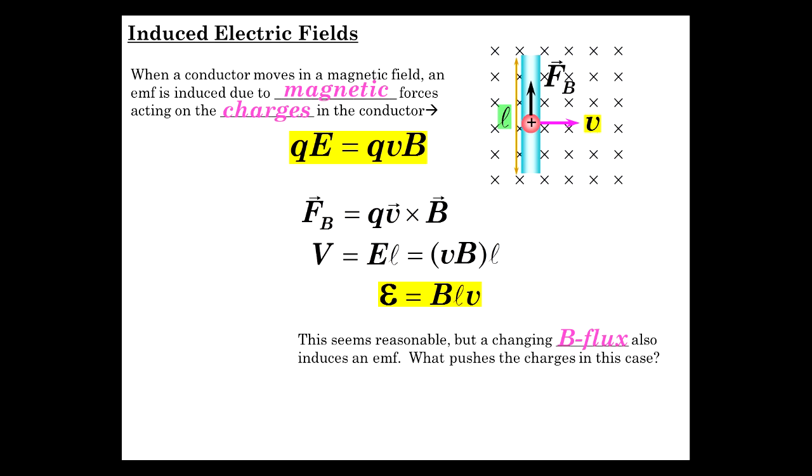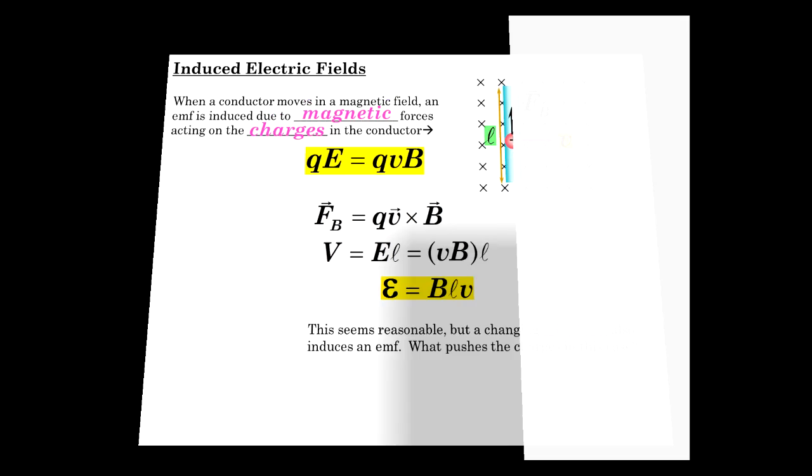But we've also established that a change in magnetic flux induces an EMF. And it may not be so simple to understand, or intuitively obvious at least, what causes the charges to move. You have a change in magnetic flux, and that's going to cause charges to separate in a conductor just because the flux changes. Let's check it out. Now, you may not think there's a problem here, but I think there is.